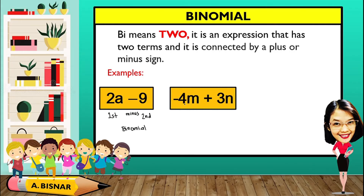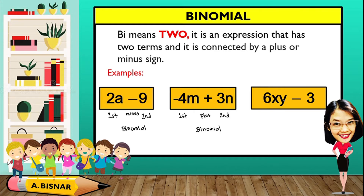Another example: negative 4m plus 3n. Negative 4m is the first term, 3n is the second term, connected by a plus sign. Since we have 2 terms, it is considered a binomial. Another: 6xy minus 3 — 6xy is the first term and 3 is the second term, connected by a minus sign, making it a binomial.